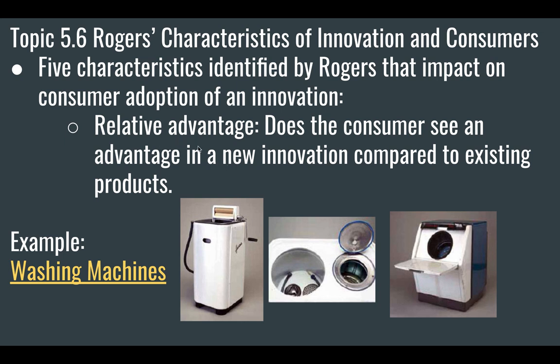As you get new products and innovations, whether somebody adopts them depends on how advantageous it is for them. For example, in the old days you'd have to turn a crank to roll your car windows up or down. Now we have electric windows, and then electric ones where you can push once and it rolls all the way up or down. These are all innovations that get adopted because they're advantageous for the consumer.